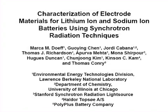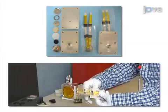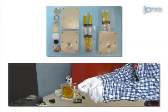The overall goal of this experiment is to study structural changes in electrodes undergoing cycling in batteries in real time. This is achieved by assembling test cells modified so that electrode processes can be studied at a beamline at a synchrotron radiation facility as the devices undergo charge and discharge.